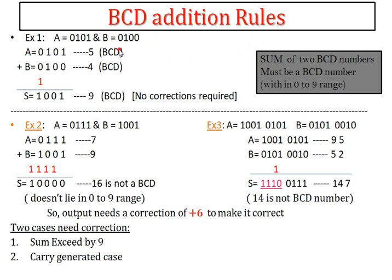I have explained BCD addition rules using examples. In example 1, A is 0101 (which is 5) and B is 0100 (which is 4). Adding these: the sum is 1001, which is 9. The sum of two BCD numbers is also a BCD number, so the condition is satisfied and no correction is required in this case.